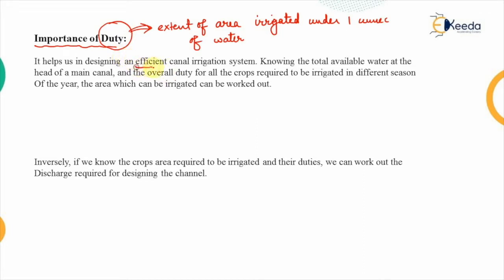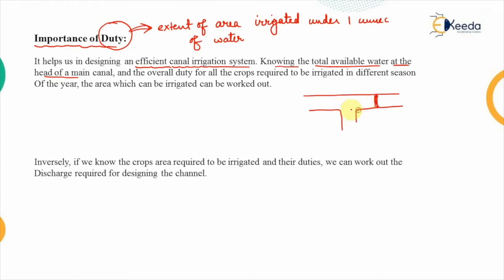If we are aware of duty, it helps us in designing an efficient canal irrigation system. If we know the total available water at the head of the main canal — where a diversion structure has been constructed across the main river — the water diverted into the first branching is known as the main canal.